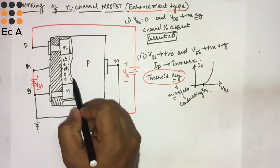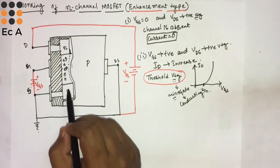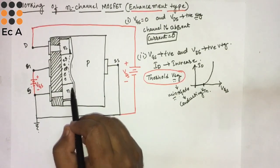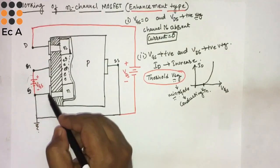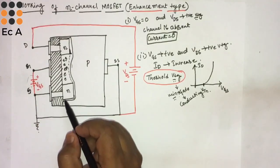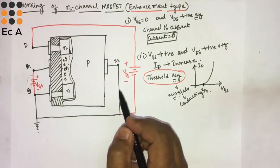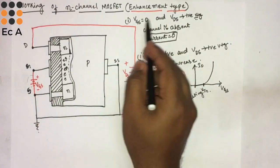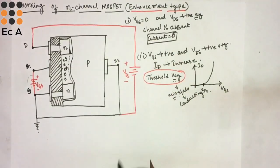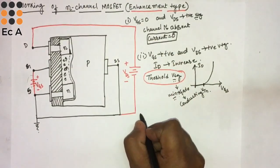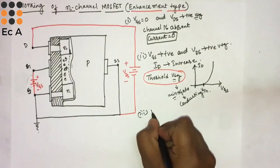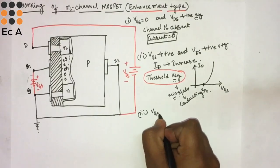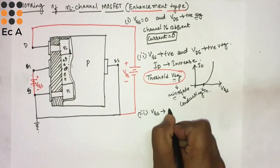Threshold voltage is the minimum positive voltage you have to connect across the gate so that the MOSFET starts conducting. Since the channel does not exist earlier and it was enhanced by the application of voltage across the gate, this type of MOSFET is known as the enhancement type MOSFET.